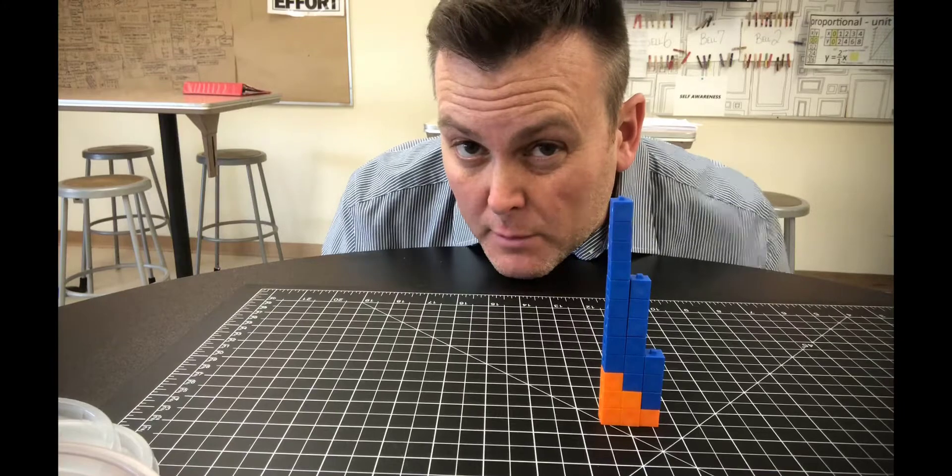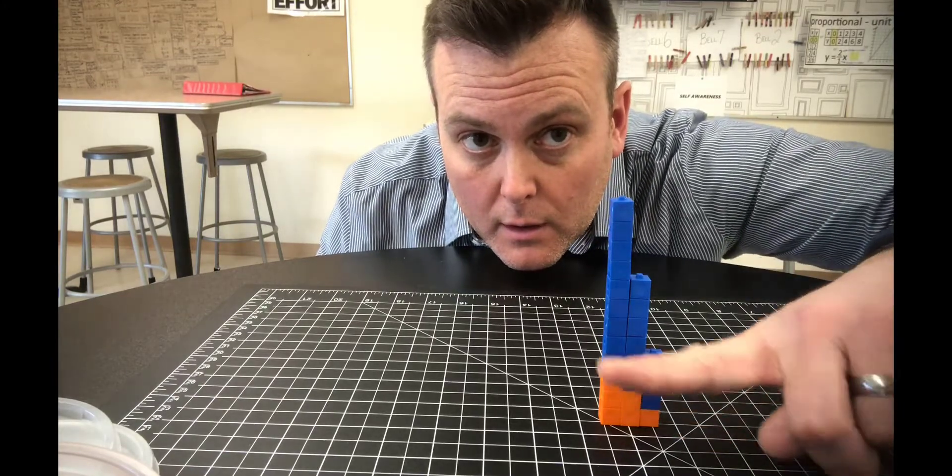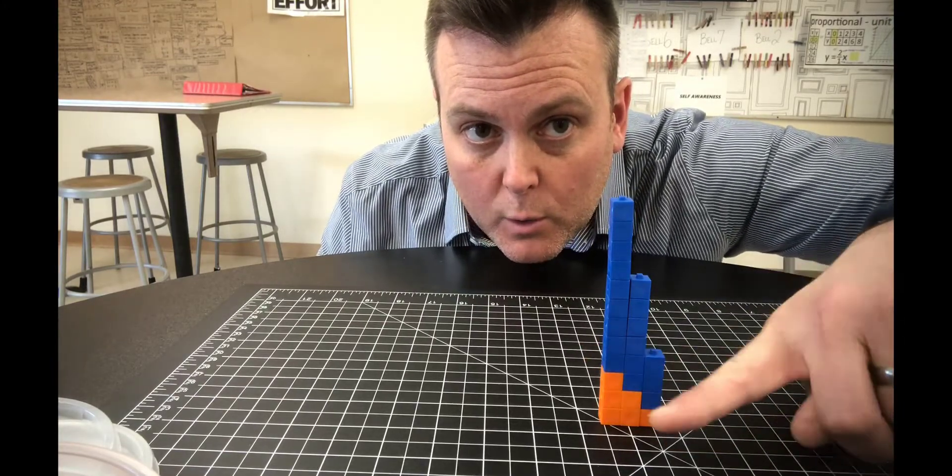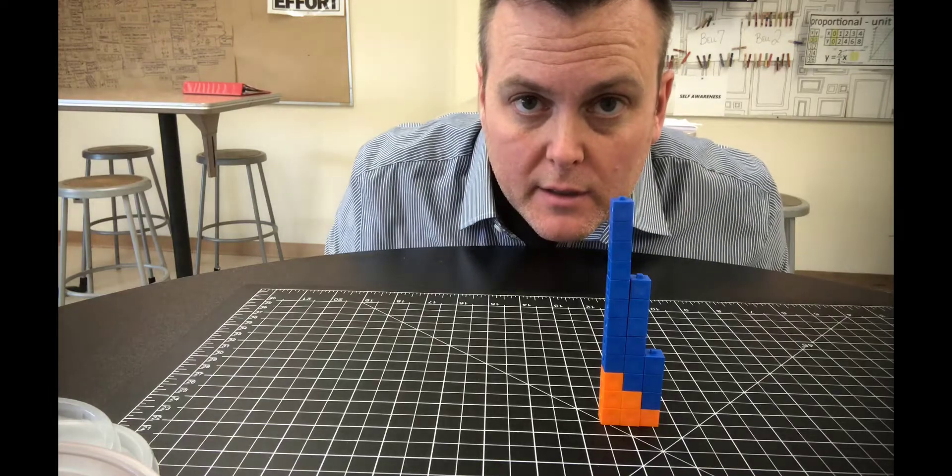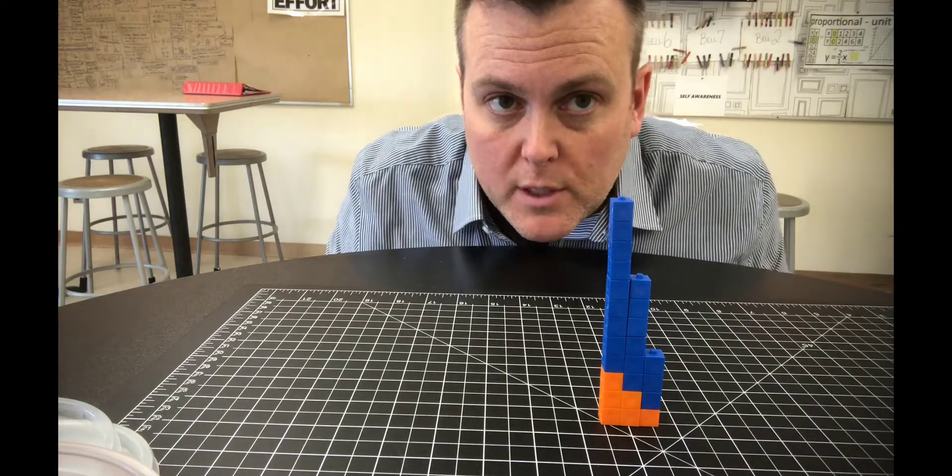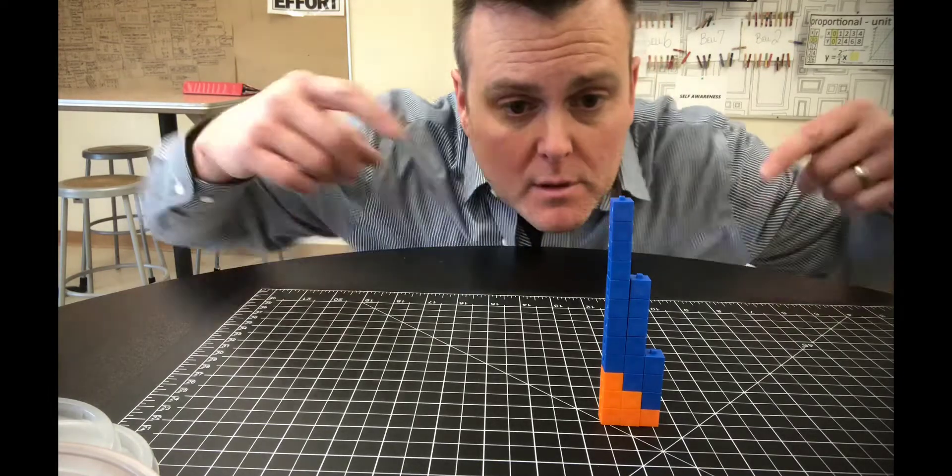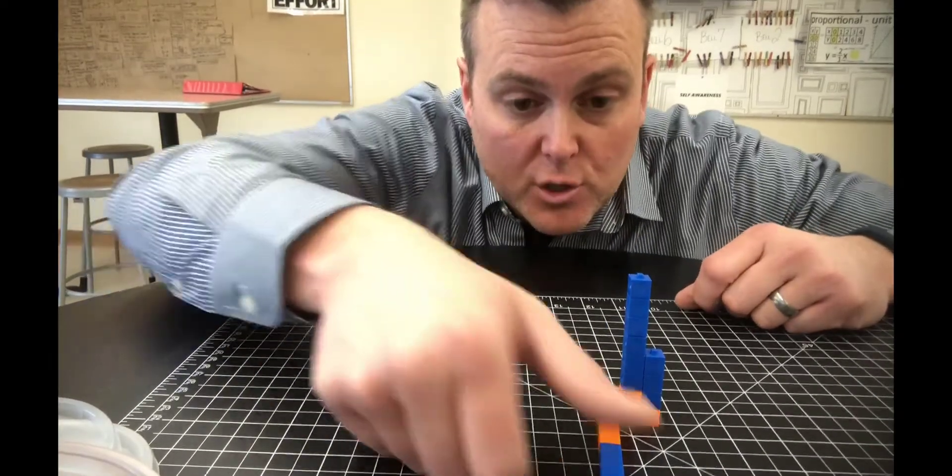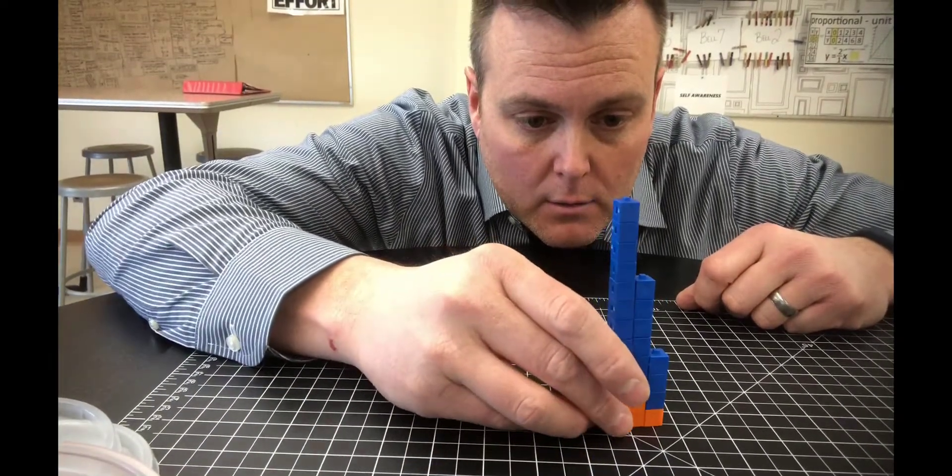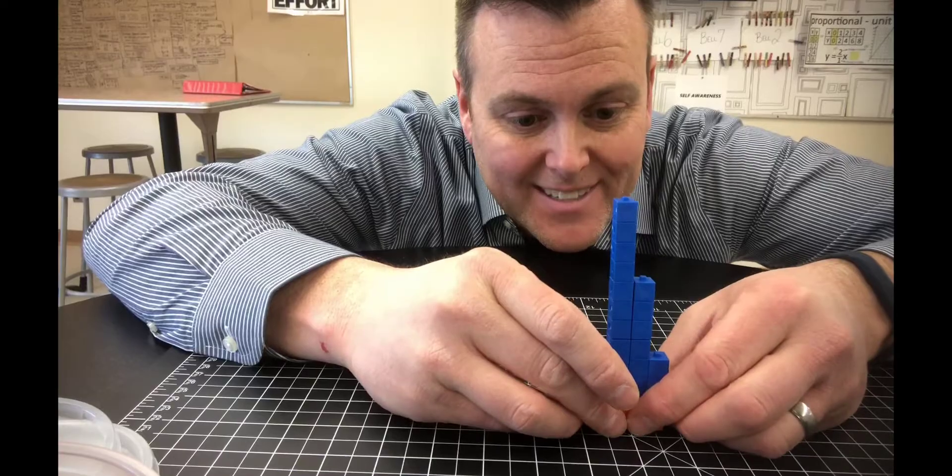Do you see a line forming a little bit between the blue and the orange? It's a proportional relationship. I could keep going, but this is going to knock over eventually. It's just too big. It makes a nice little line.